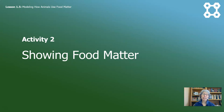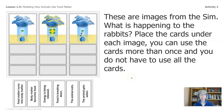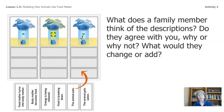Activity two: showing food matter. Let's show what happens to the food molecules in an animal's body. This sheet is provided for you to cut out and rearrange. If you don't have scissors at home, you can just write in the spaces provided. These are images from the sim — recognize these? What is happening to the rabbits? Place the cards under each image. You can use the cards more than once and you don't have to use all the cards. Pause the video so you can work on this. What does a family member think of the way you arranged these different cards? Do they agree with you? Why or why not? What would they change or what would they add?